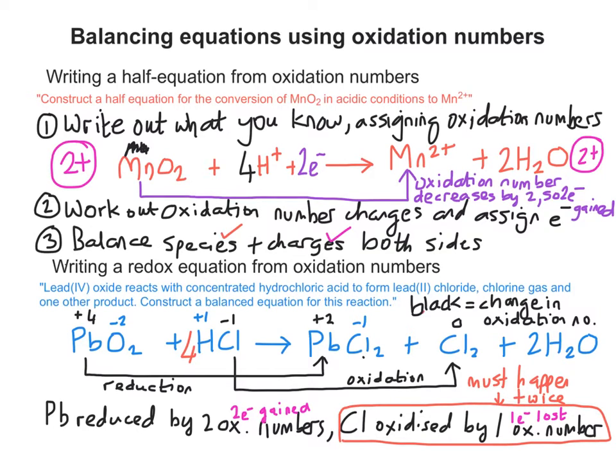So to balance it, what we have to do is actually multiply the HCl by 4. So you might be thinking, how come he's just said that it has to happen twice, and now he's multiplied it by 4? If you look closely, within those four chlorines that are in the four HCls, only two of them actually get oxidised. The other two remain the same.